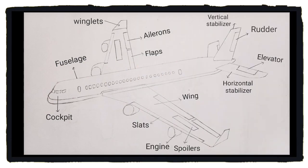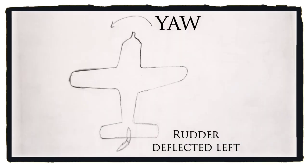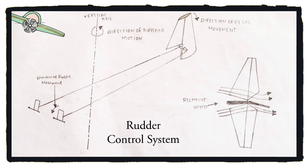Rudder. It is located at the tail of an aircraft on the vertical stabilizer and helps to move the aircraft around the vertical axis, i.e. yaw. These are operated using rudder pedals. When the left pedal is pushed, the rudder deflects left and the aircraft turns left. Similarly for the right one.